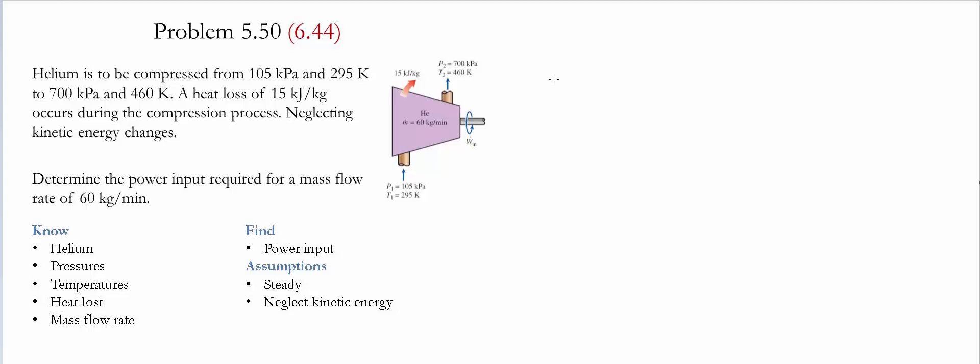To start the problem we're going to do a balance of energy. We're going to do it in terms of rate of energy change. So we have E dot in minus E dot out is equal to the change of E dot in the system. Since this is a steady problem, this quantity is equal to zero.